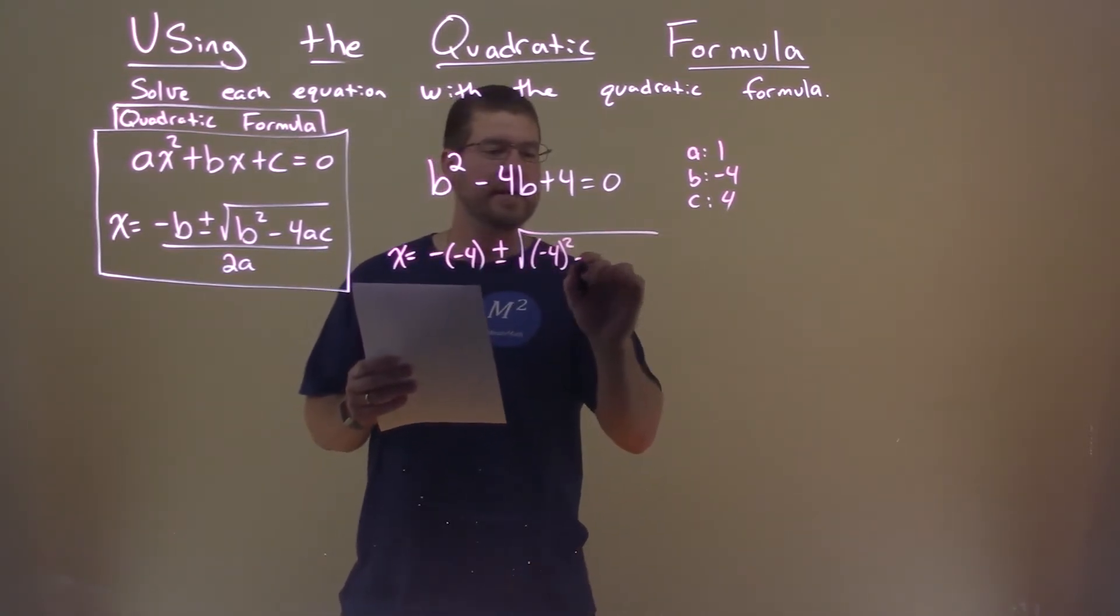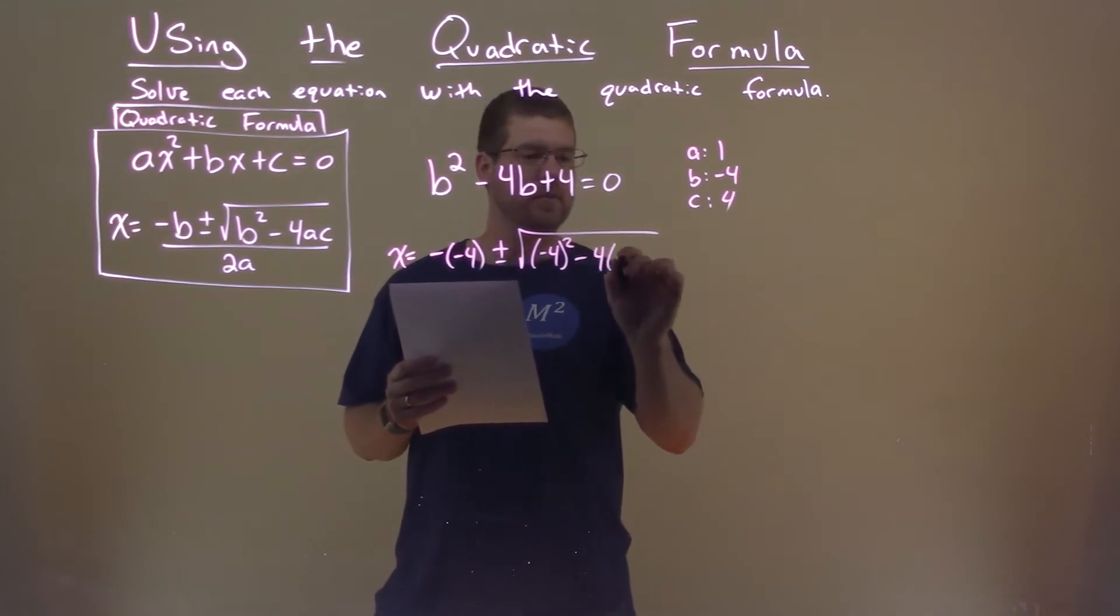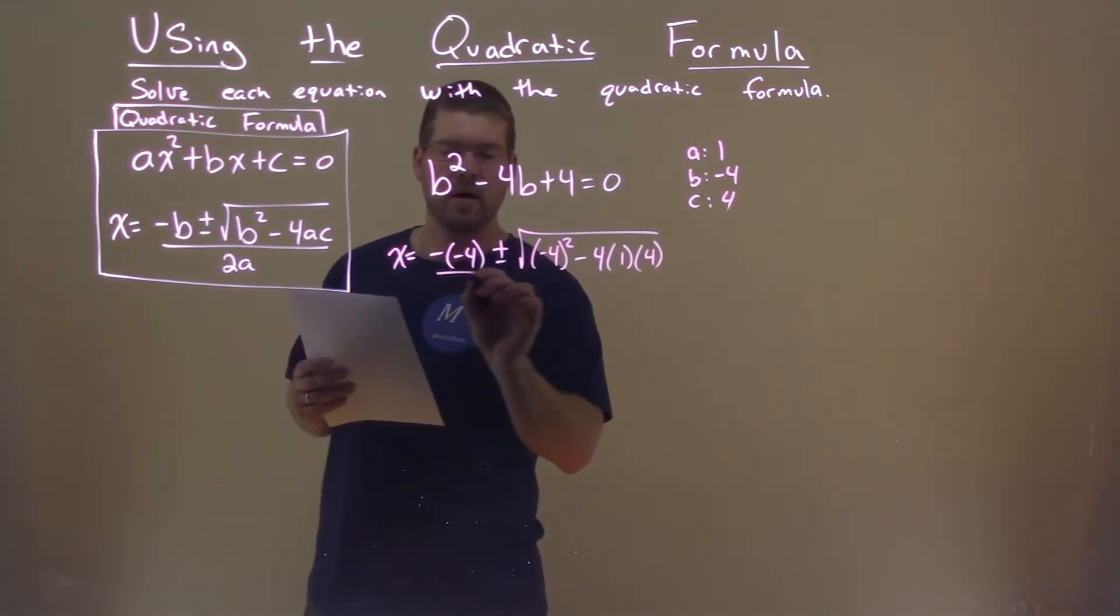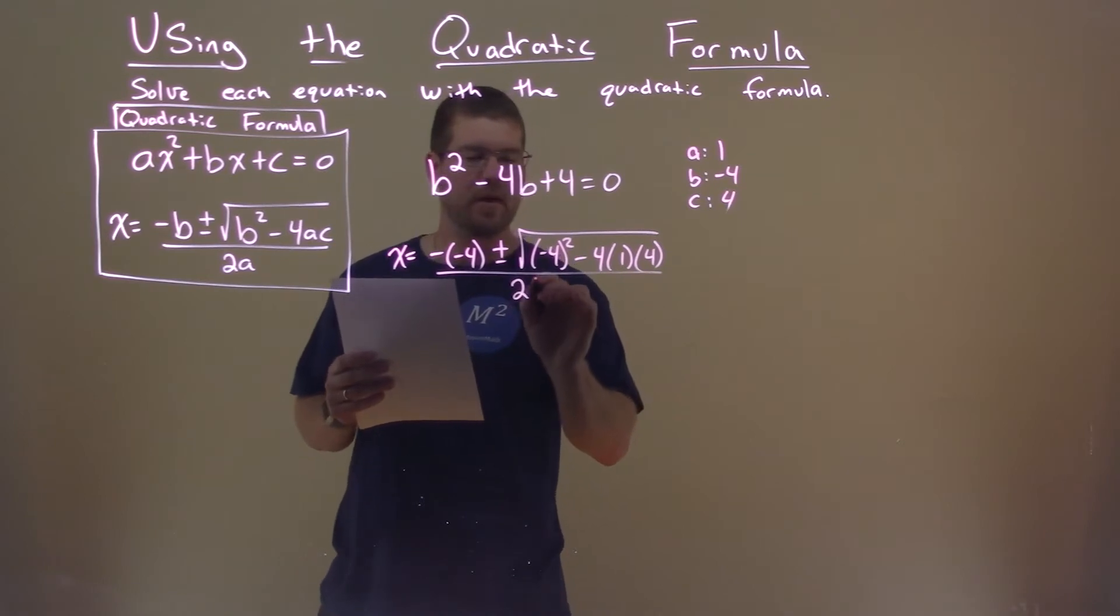negative 4 squared, minus 4 times a, which is 1, times c, which is 4, all over 2 times a, which is 1.